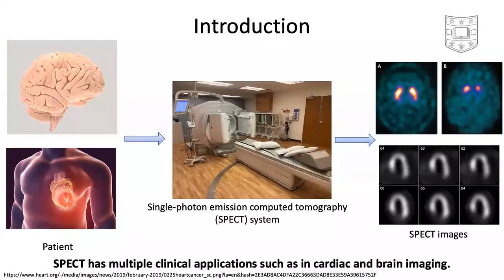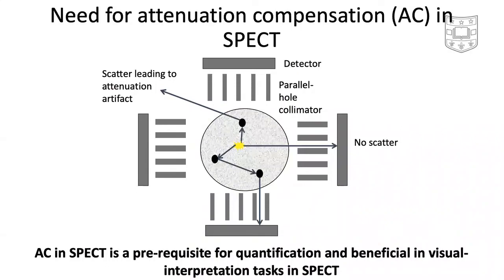SPECT is a widely used nuclear medicine imaging modality. It can show the radiotracer distribution in the human body by detecting gamma ray photons and has multiple clinical applications such as in cardiac and brain imaging. However, attenuation of photons as they traverse from the source to the detector impacts the performance of SPECT on clinical tasks. Compensating for attenuation is a prerequisite for reliable quantification and beneficial for visual interpretation tasks in SPECT. Thus, there is an important need for methods to perform attenuation compensation, or AC, in SPECT.